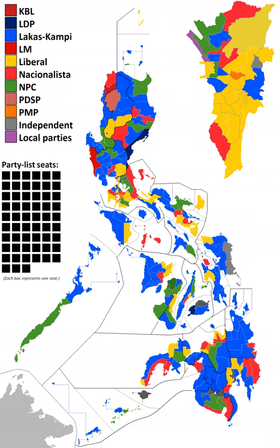Campaigns in House of Representatives elections are usually conducted on a district-by-district basis; there is no nationwide campaign. The races are between local politicians in the districts, and their allegiances and parties may switch from their announcement on the intention to run, registering as a candidate, printing out of ballots, election day, and from the convening of the 15th Congress. The sitting president's party usually controls the House of Representatives no matter the election result.